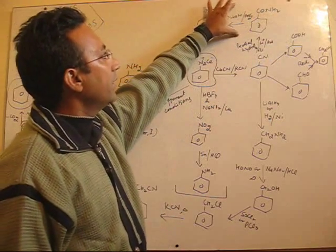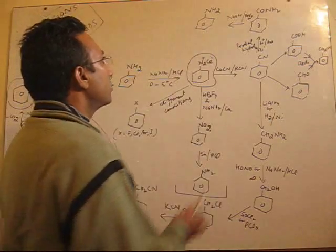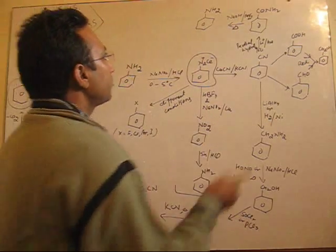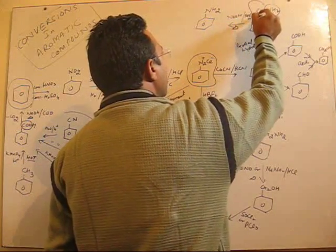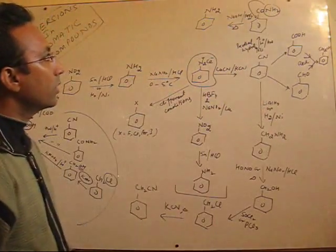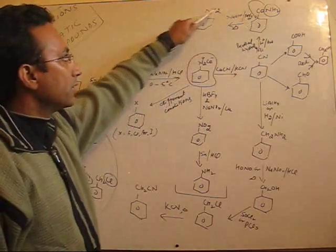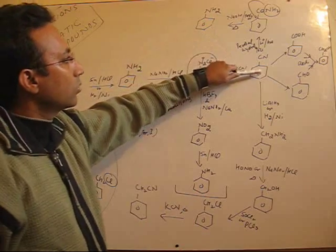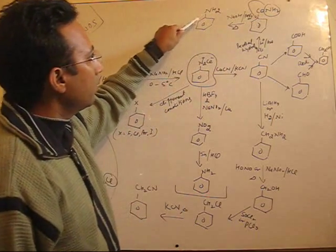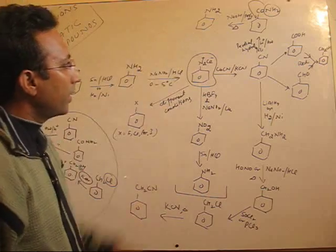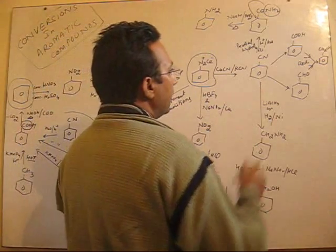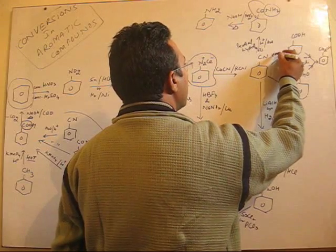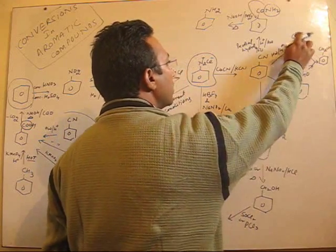Benzamide — amides undergo Hoffmann degradation reaction when heated with sodium hydroxide and bromine. The NH2 shifts to give aniline. So one route is towards amides and then back to aniline. Another route: if cyanide undergoes complete hydrolysis, you will get benzoic acid.